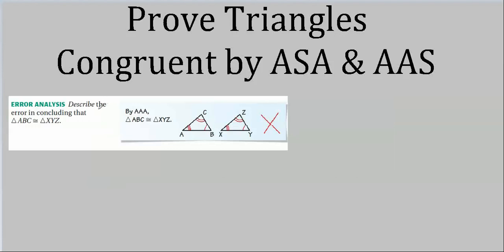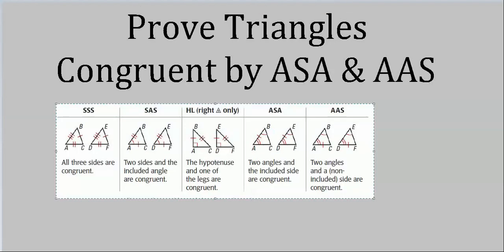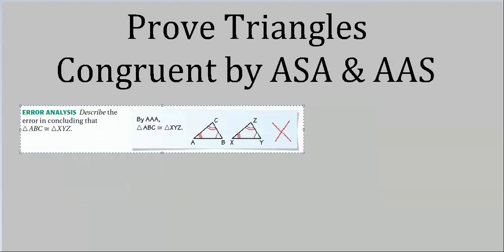That dumb guy made a mistake again. He's concluded that triangle ABC is congruent to triangle XYZ by angle angle angle. That'd be great if there was such a thing. I put this list up here and I don't see an AAA anywhere — that's because there isn't one. So he made one small mistake: he cited a theorem which doesn't exist. You can't do that — you can't just make up your own theorems and postulates.